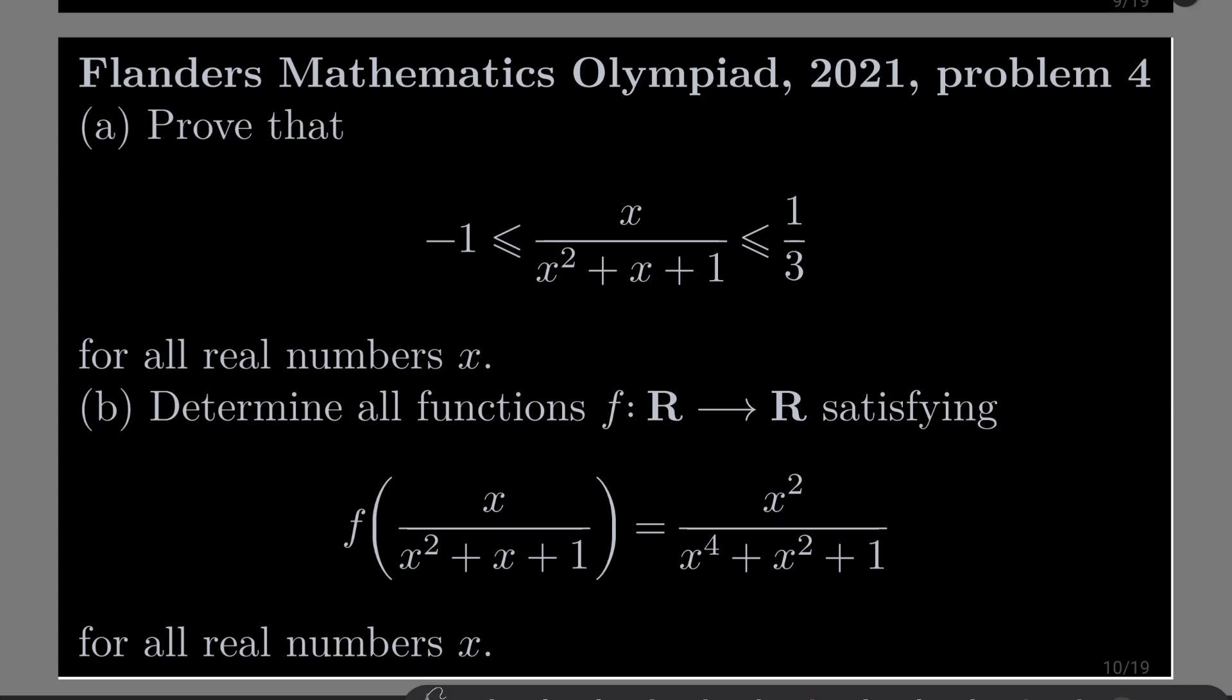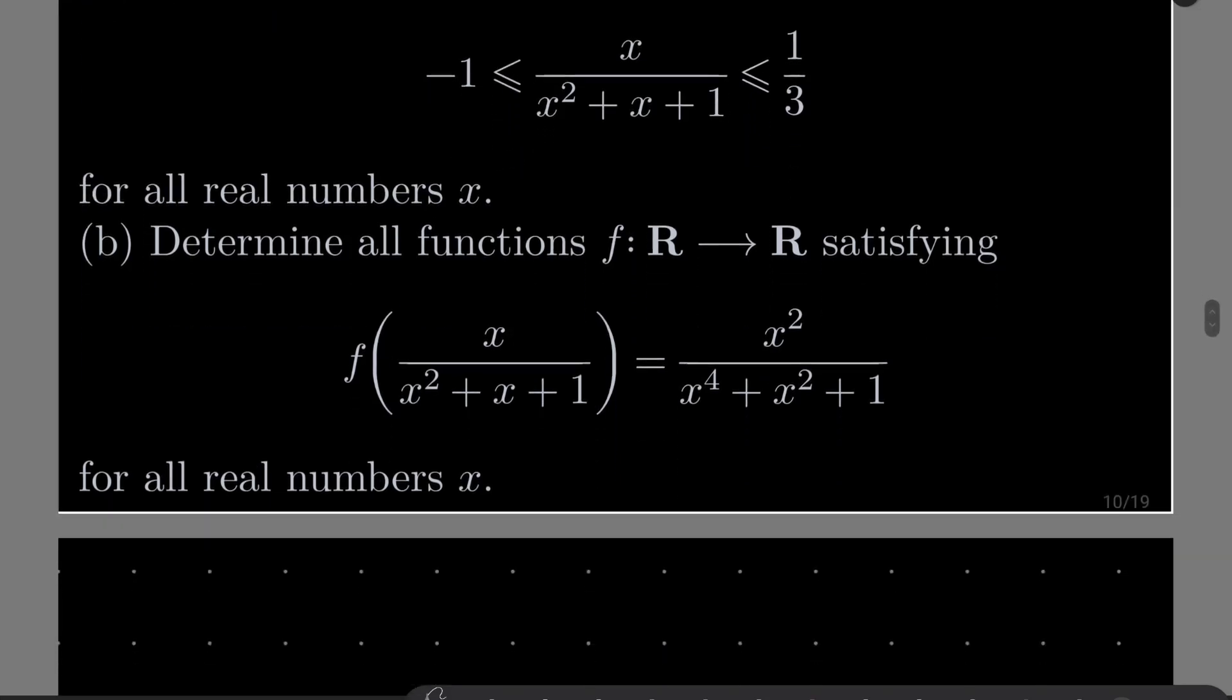And part B, connected to part A, we wish to find all functions f from the set of real numbers into itself such that f of x over x squared plus x plus 1 equals x squared over x to the fourth power plus x squared plus 1 for all real numbers x.